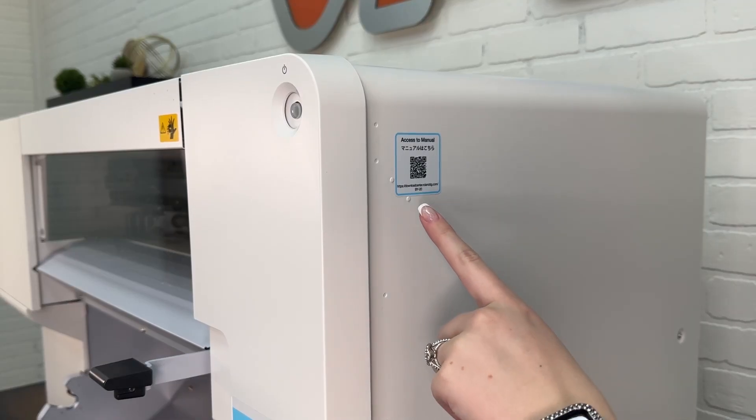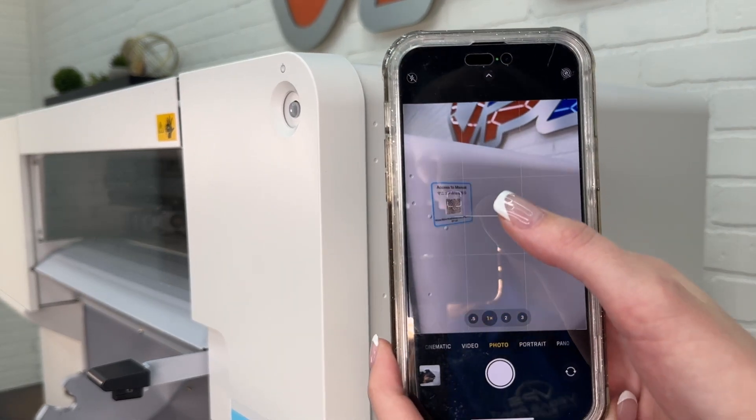Now that I have the machine unboxed and it's behind me, we're going to go ahead and proceed with the installation process. There's a QR code on the side of the machine that you can scan to take you to the installation guide with all the software you need to download.